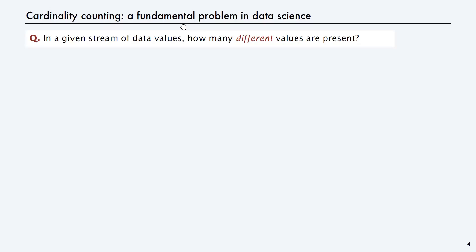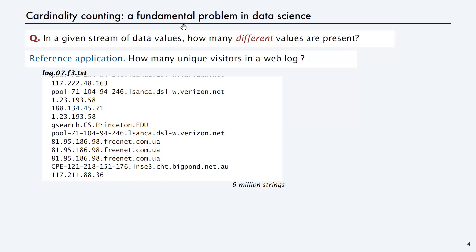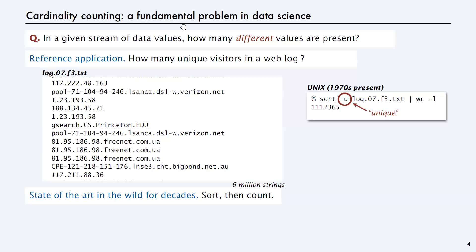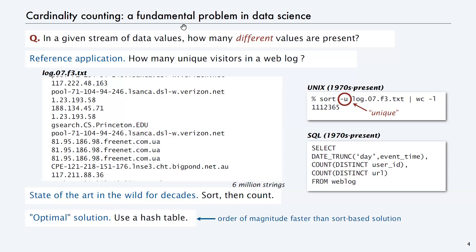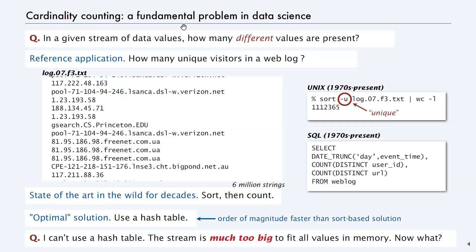The problem is: how many different values are there in a stream of data items? A reference application is a web log - how many different people have clicked on my website? For decades, the solution has been to sort them and count the distinct ones, since equal values will be together. That was in Unix in the 70s and it's still in SQL. You can do order of magnitude better using a hash table, but the problem is that the stream might be much too big to fit all the values in memory. Maybe there are trillions of items.